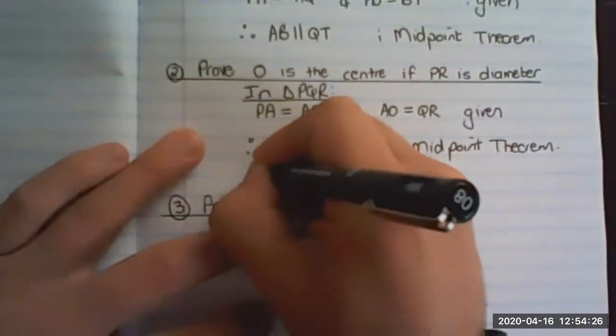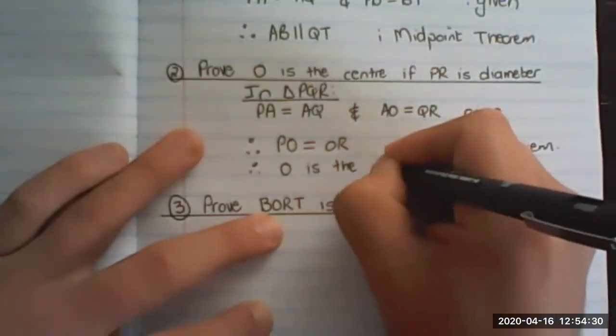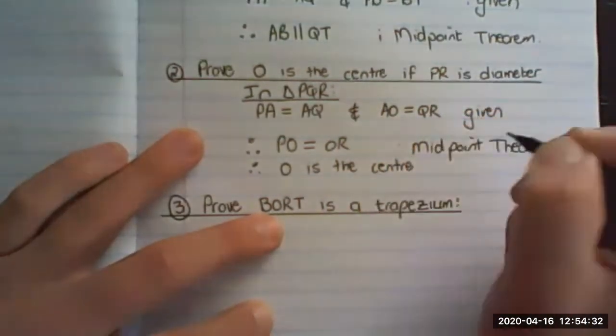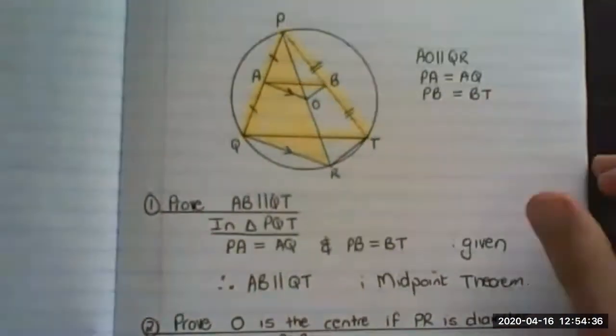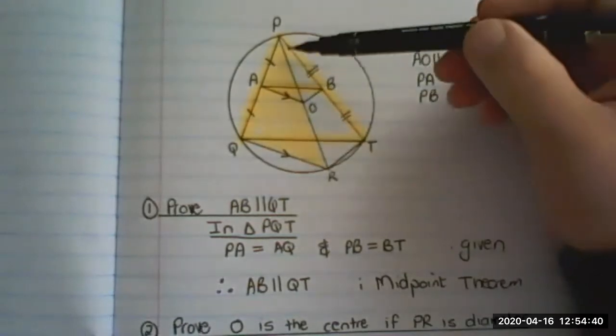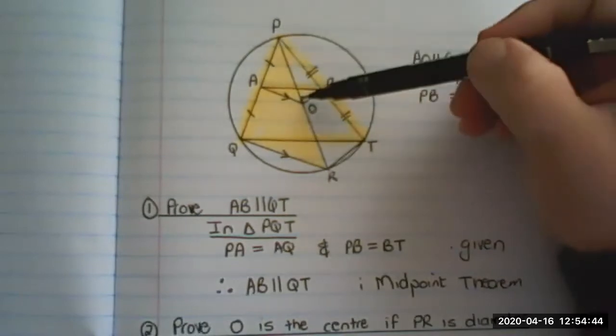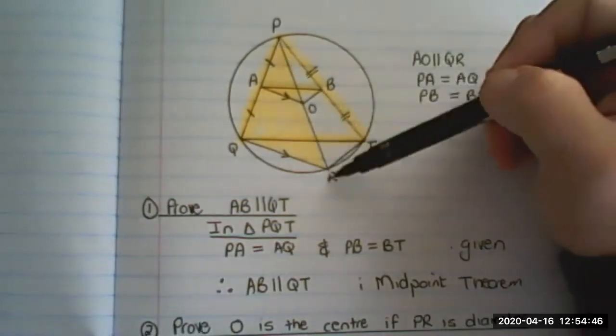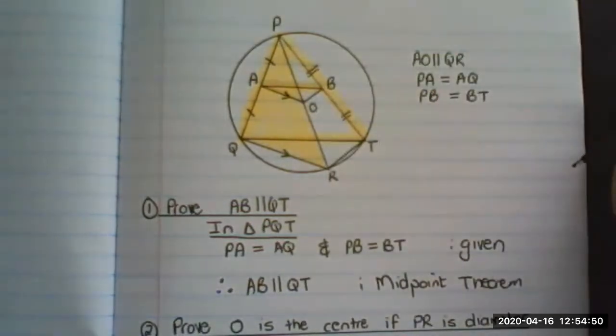All right, and therefore O is the center. Because that line, PO equals to OR, is the diameter. And because it's cut in half, that means PO represents the radius and OR also represents the radius, which makes that the center.